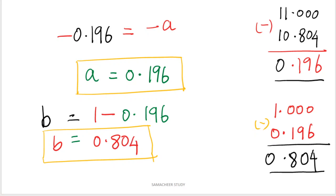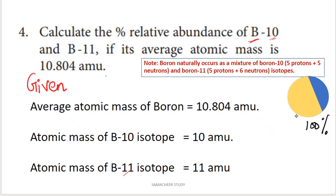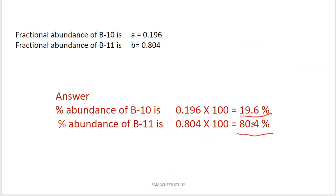Now that the fractional abundance A is calculated, we convert to percentage abundance by multiplying by 100. B10 percentage abundance is 19.6% and B11 percentage abundance is 80.4%. Adding these two gives 100%, confirming the answer. So, 19.6% is B10 and 80.4% is B11.